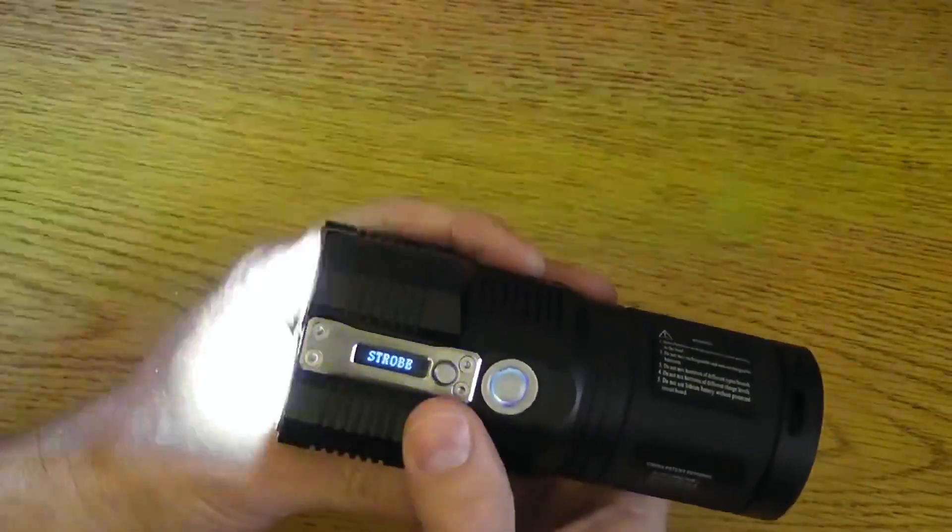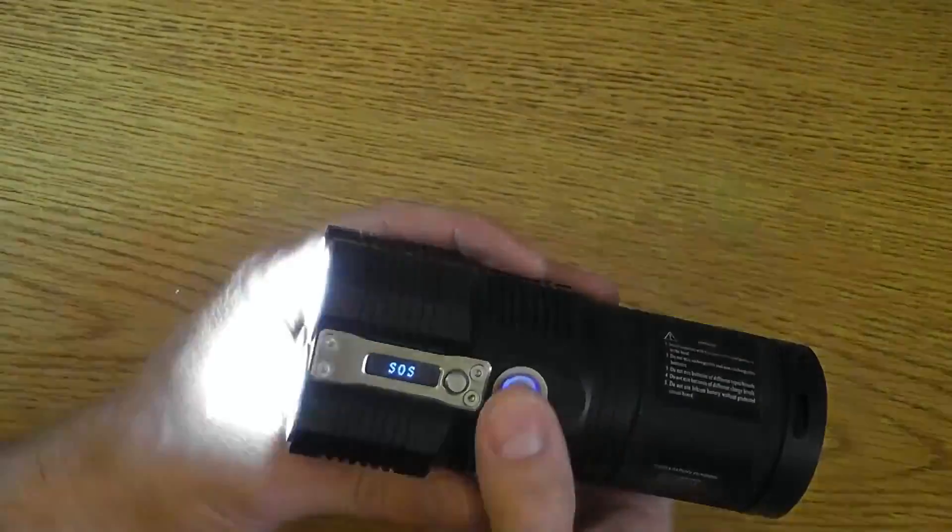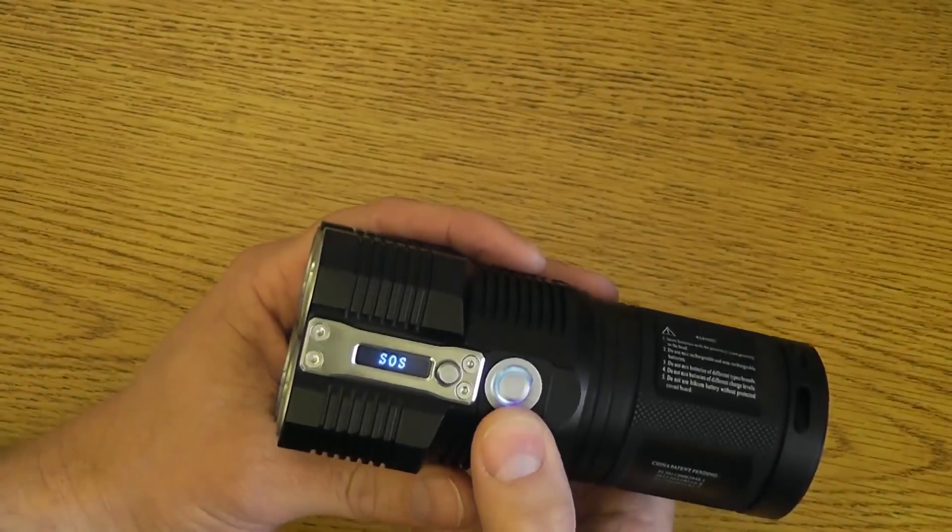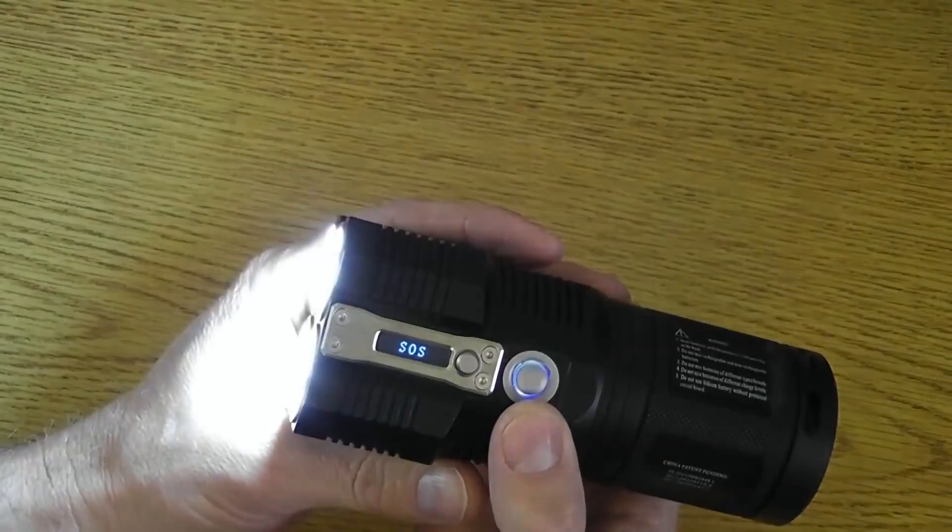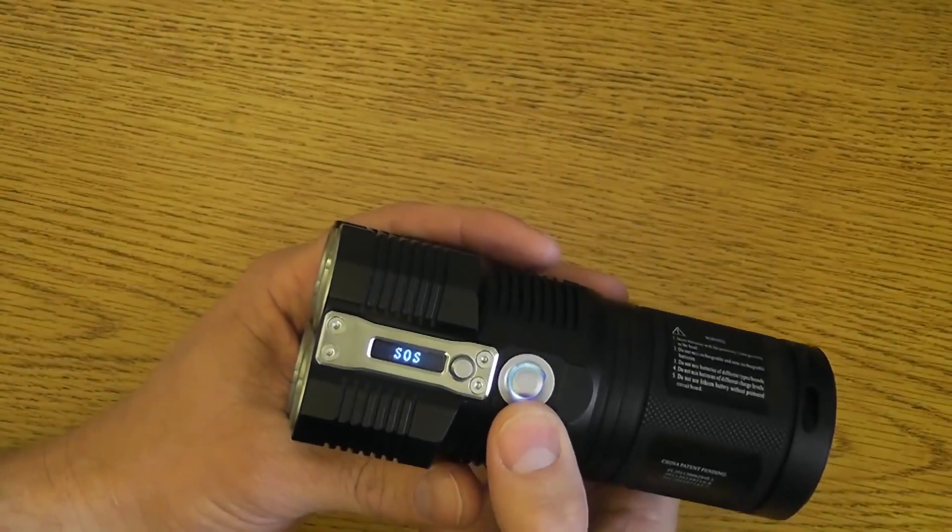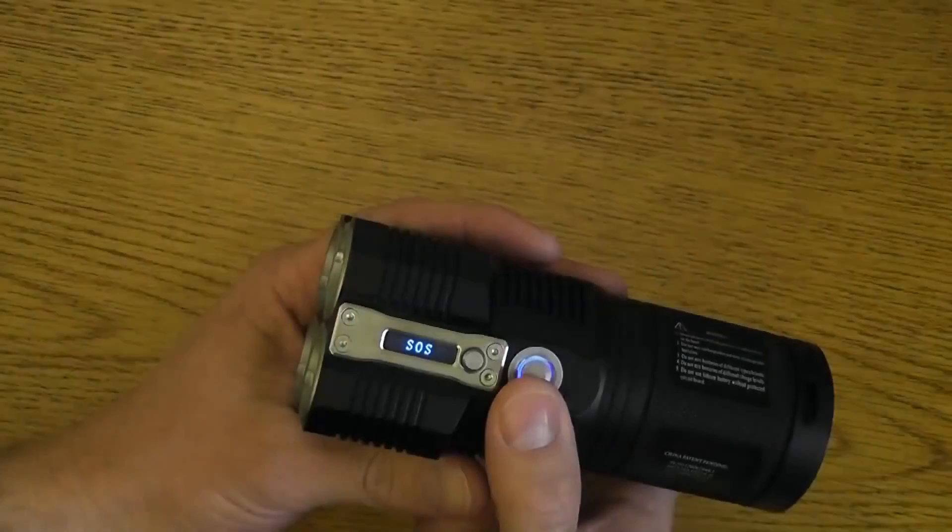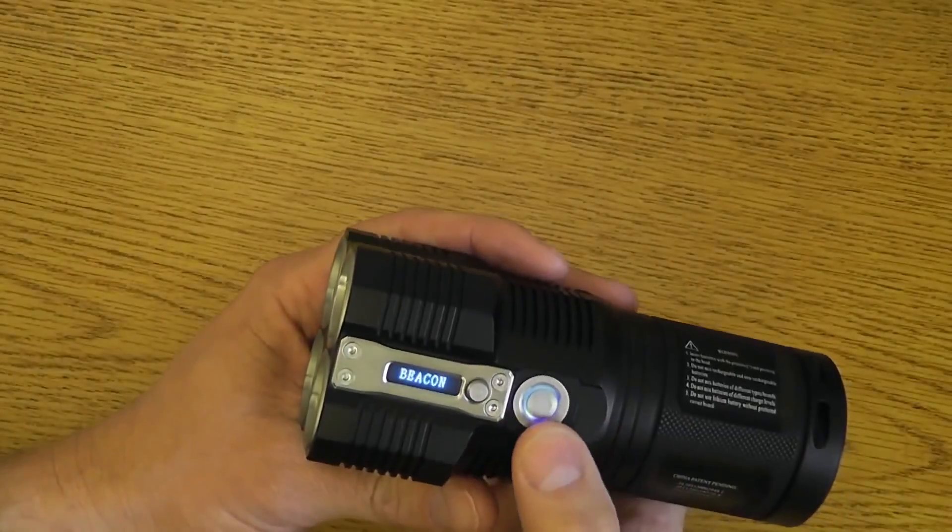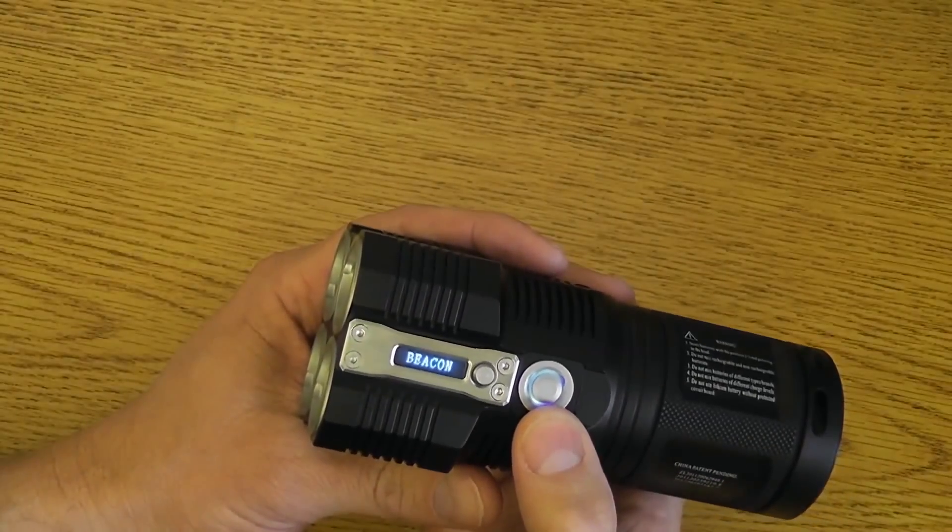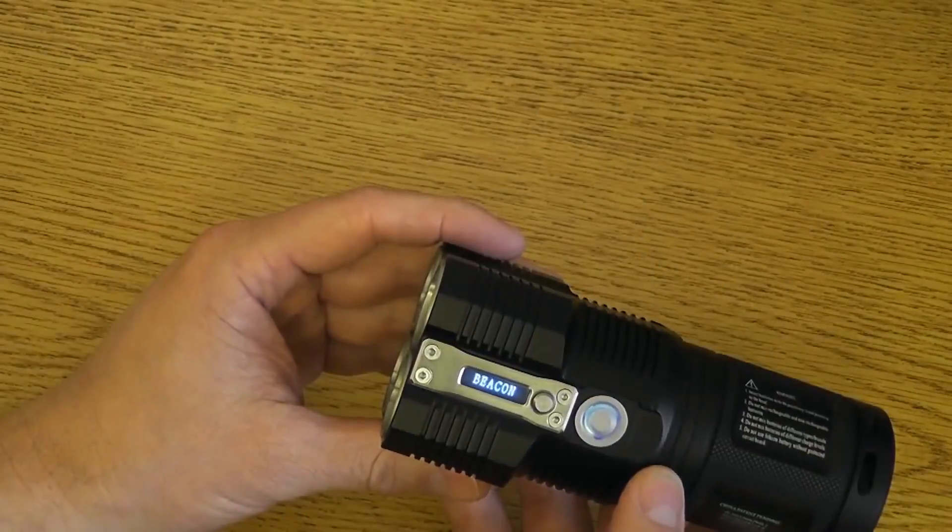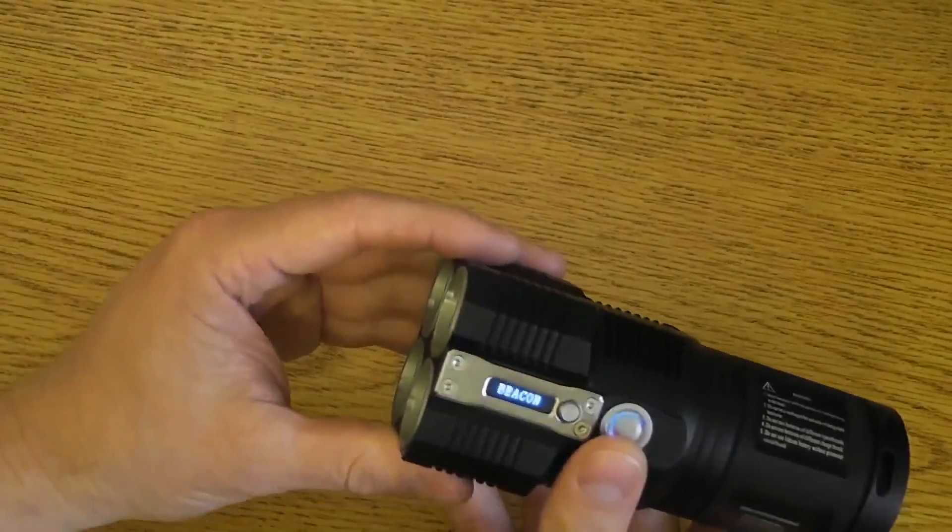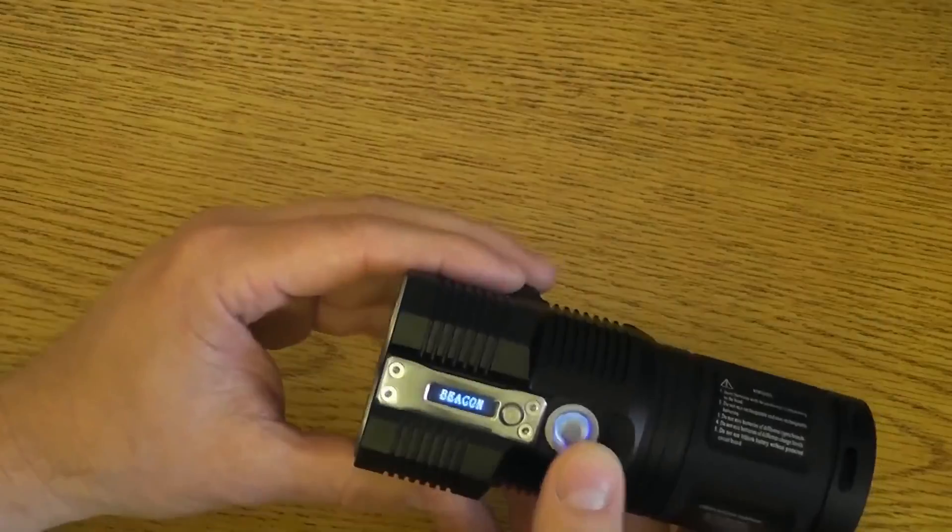If I press and hold halfway while it's in strobe mode, or not hold, but just do a half press, it enters SOS mode. It's kind of cool to have. It does appear to be at full output on SOS mode. Maybe not a mode that I'll use a whole lot, but if I press and do a half press again, it goes to beacon mode. So, beacon mode is really, really cool. From here, we can do a half press and go back to strobe, or we can just shut it off if we want. And now we're back in standby again.